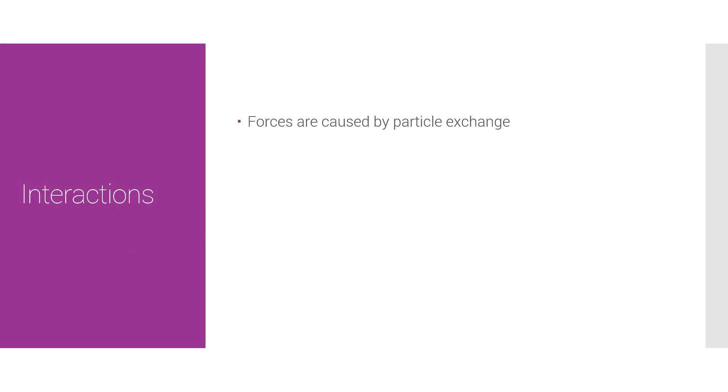Repulsion and attraction can be explained by the bowling ball. If someone throws a bowling ball, they're going to be pushed backwards, and whoever catches the bowling ball is also going to be pushed backwards. The bowling ball is essentially the concept of an exchange particle.